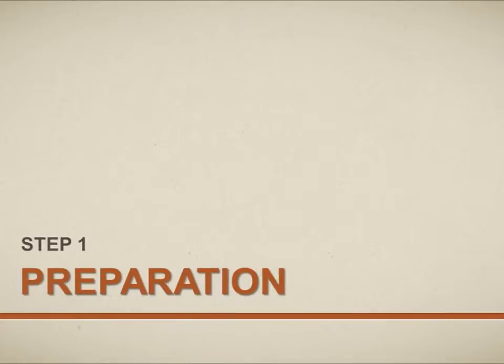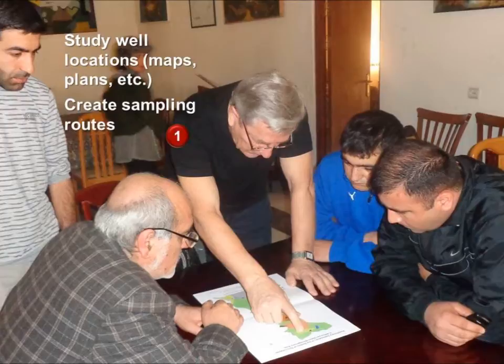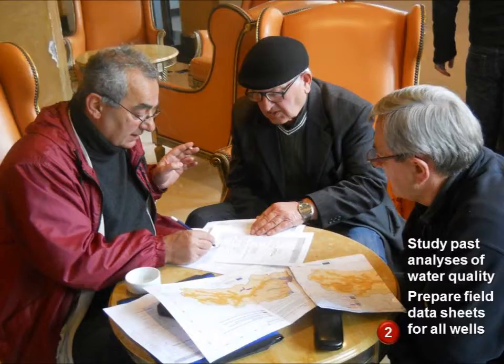Step one: preparation. The sampling process starts with careful planning and preparation. This saves time and helps to minimize problems that tend to occur during field work. Prior to the field trip, the sampling team should study well locations and well design to establish sampling routes. An advanced understanding of the hydrogeology and flow dynamics of a system is also important. Study any previous sampling work that has been done in the area, and gather any available information on water quality and hydrogeological characteristics of the aquifers to be sampled.